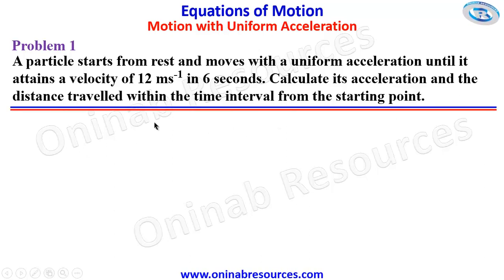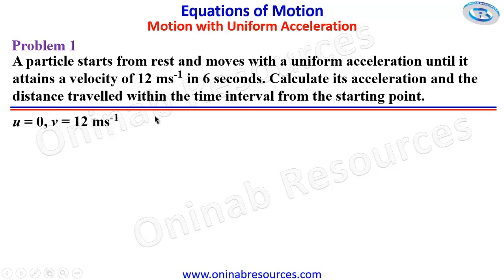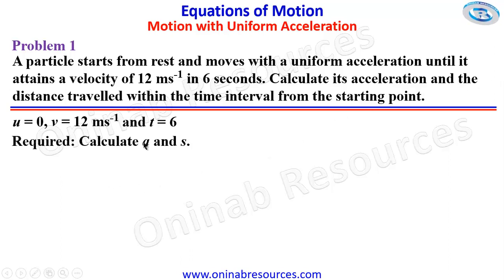So we start the solution of the problem. A particle starts from rest — any object starting from rest, the initial velocity is 0 — until it attains a velocity of 12 meters per second. So the final velocity is 12 meters per second and the time interval is 6 seconds. So we have to calculate the acceleration and the distance.